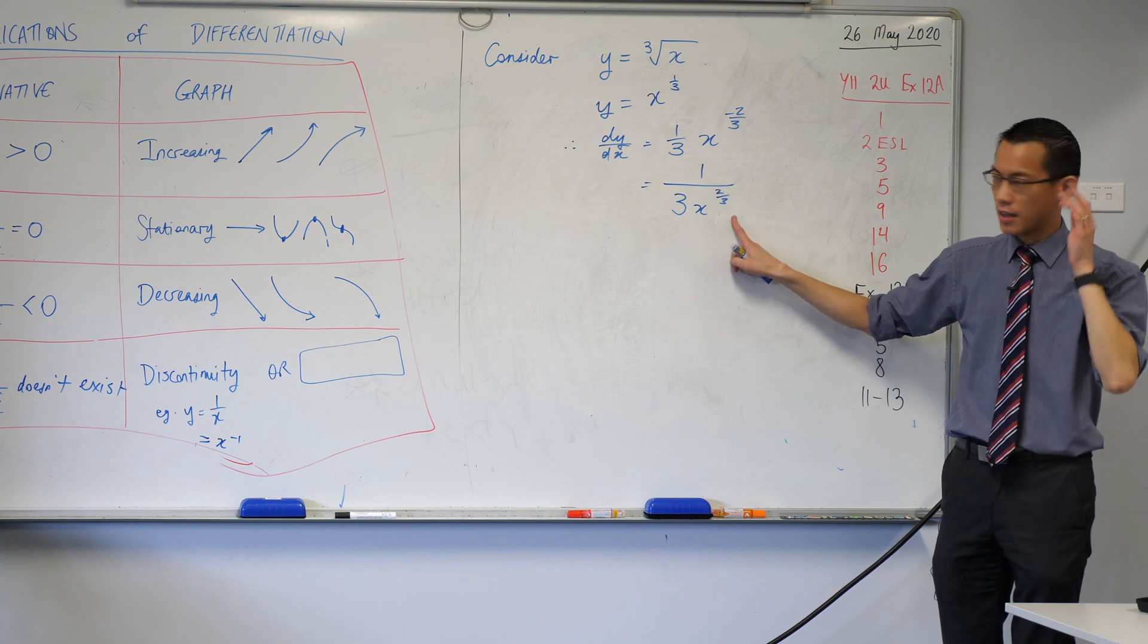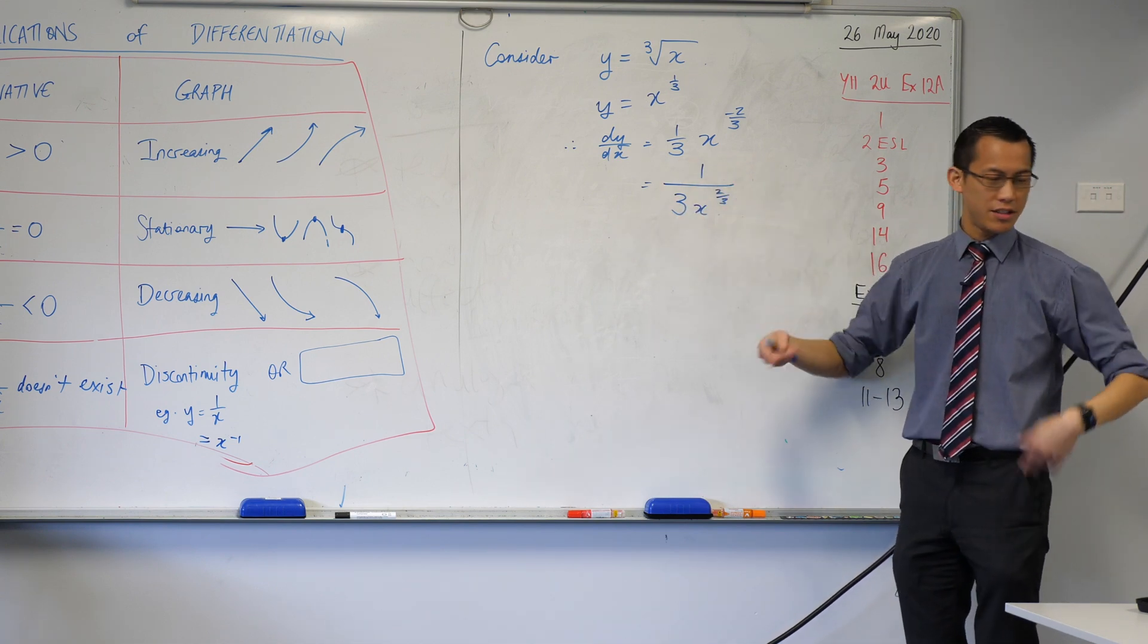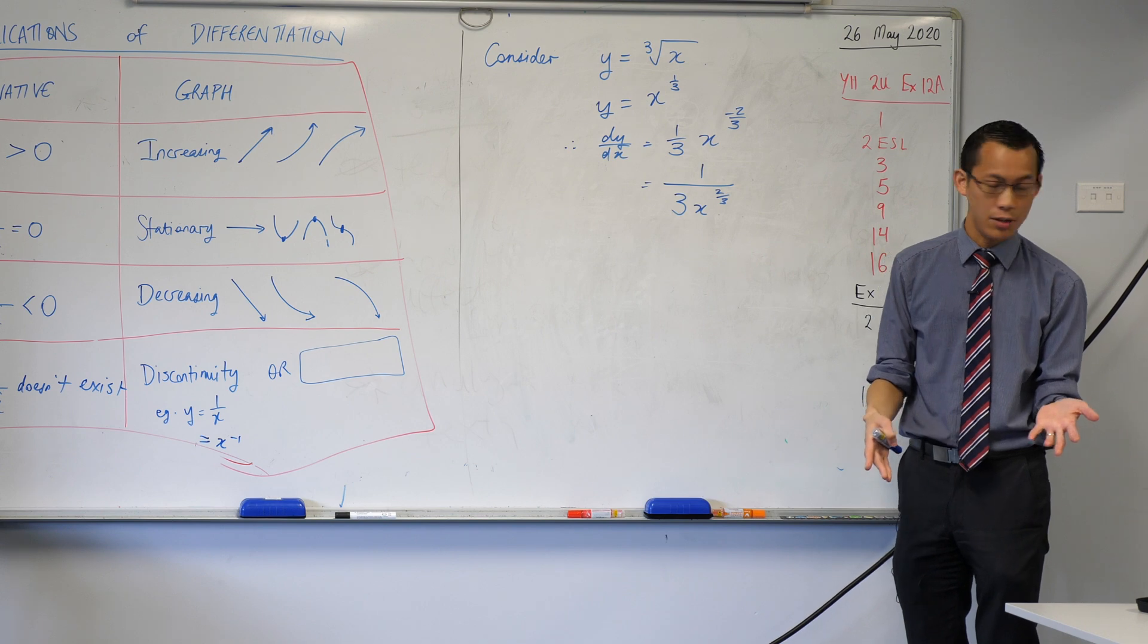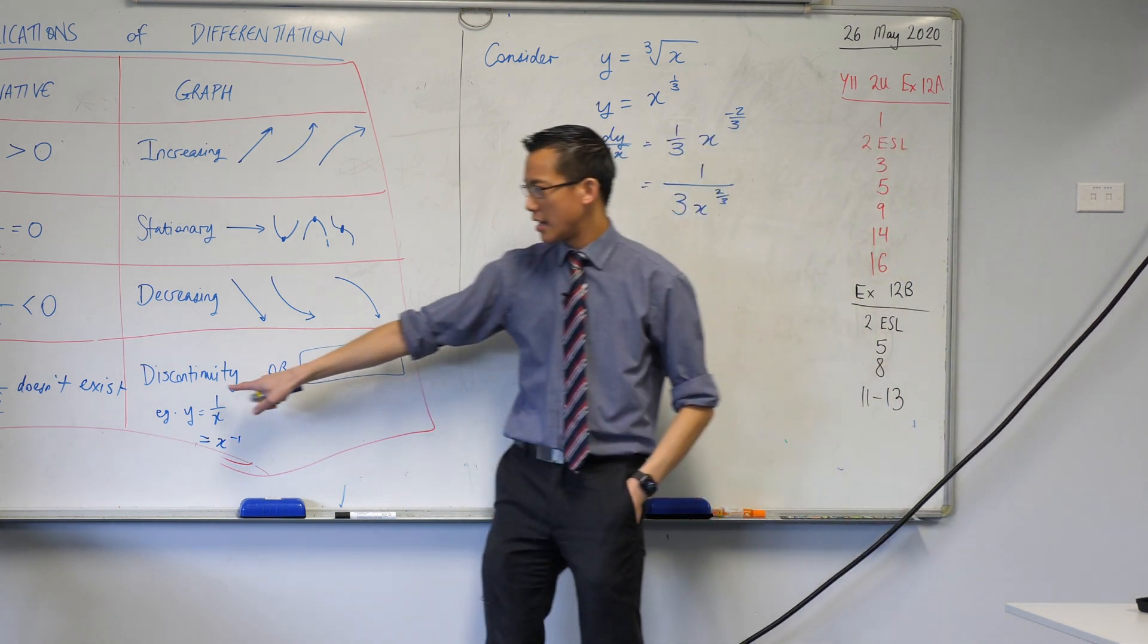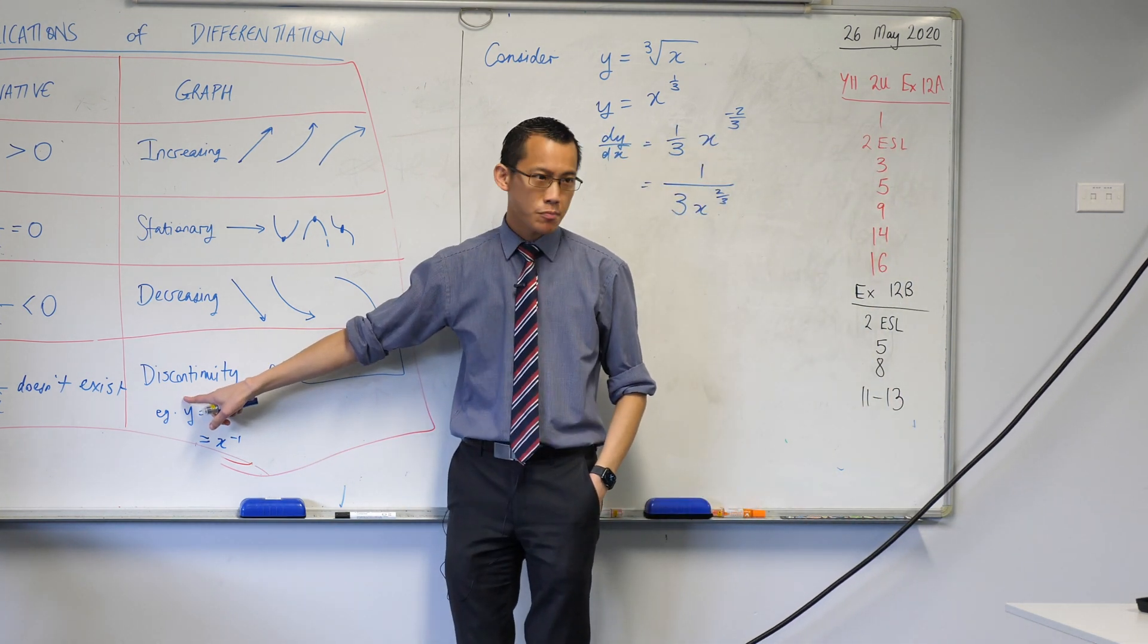Now, it's tempting to think that if you put x equals 0 in here, I'm not allowed to do that. I'm not allowed to divide by 0. It's tempting to think it must be one of these things. But it's not, because have a look back at this original function.